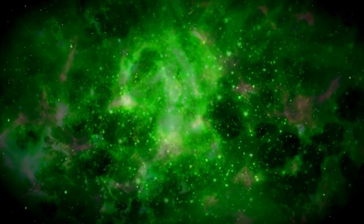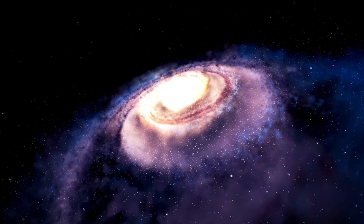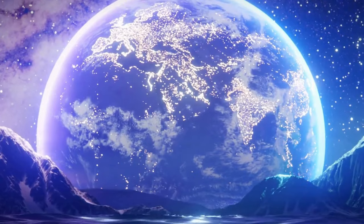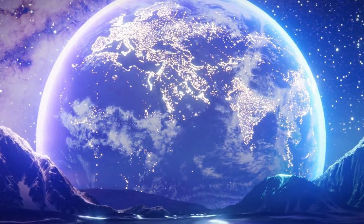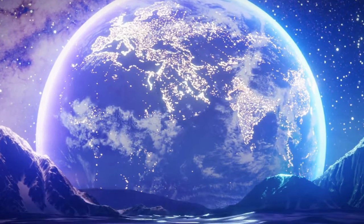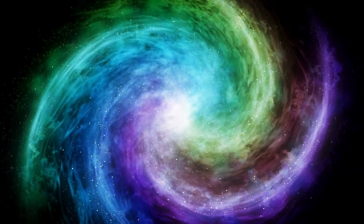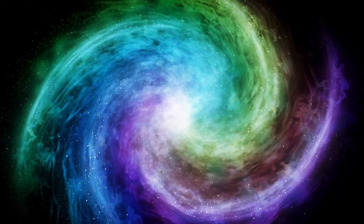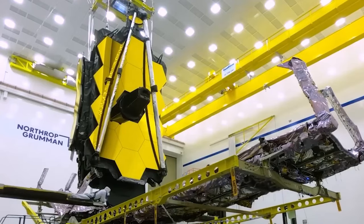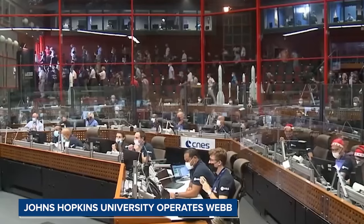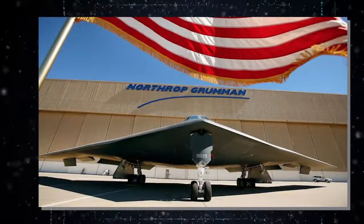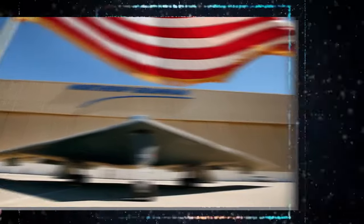Furthermore, the James Webb Telescope's observations have shed new light on the formation and evolution of globular clusters within Andromeda, dense agglomerations of stars that populate its halo and outskirts. By analyzing the spectral signatures of these ancient stellar ensembles, astronomers have gleaned valuable clues about the galaxy's turbulent history, including its interactions with smaller satellite galaxies and the process of galactic cannibalism.